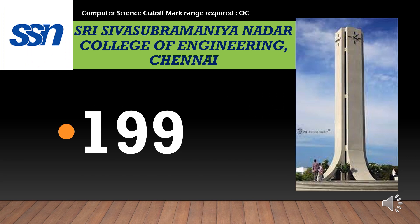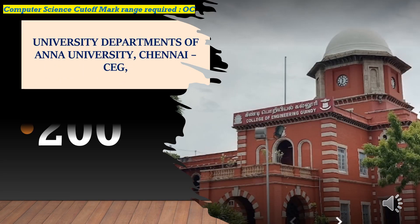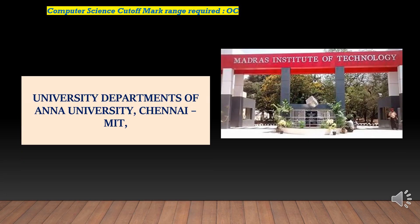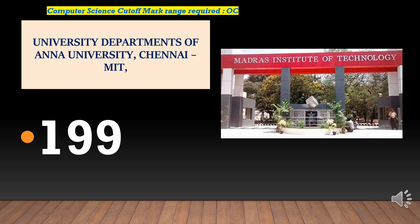Shri Siva Subramania Nadar College of Engineering — cut-off required for CSEOC is 199. University Departments of Anna University — cut-off required for CSEOC is 200. PSG College of Technology — cut-off required for CSEOC is 200. Madras Institute of Technology — cut-off required for CSEOC is 199.